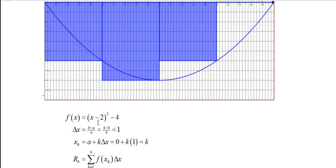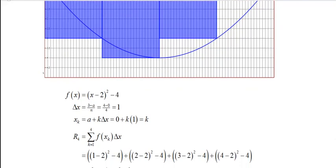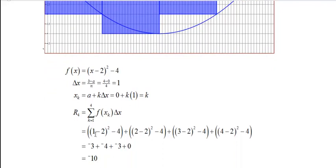f(x) is (x-2)² - 4. x sub k is a plus k delta x, which is a is 0, delta x is 1, so that just works out to be k. So x₁ is 1, and x₂ is 2, and x₃ is 3, and x₄ is 4. And so we want to find f of each of those values. So we take this formula and we plug in 1, 2, 3, and 4. And delta x is 1, so I can leave that out. So we're multiplying each of these by 1.